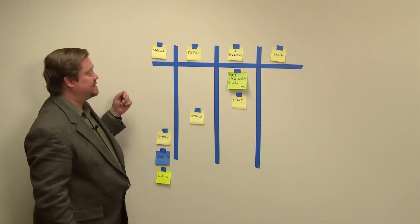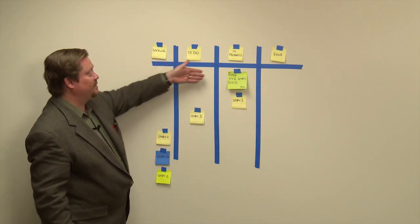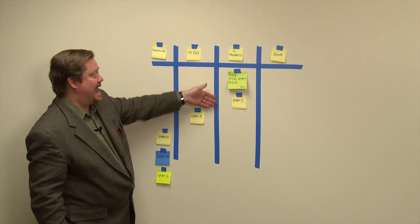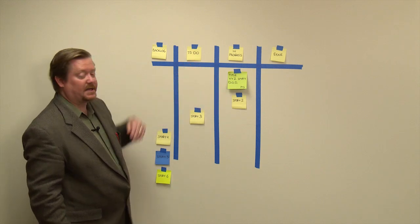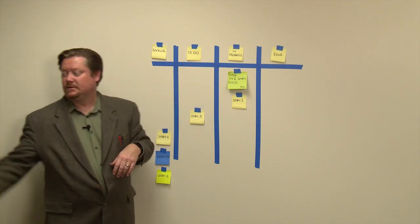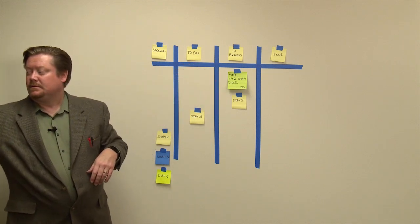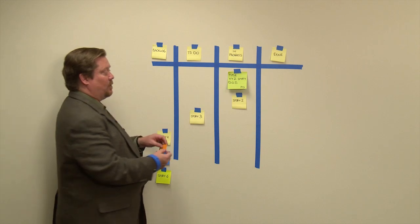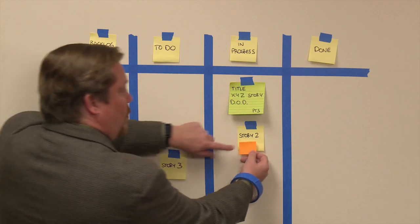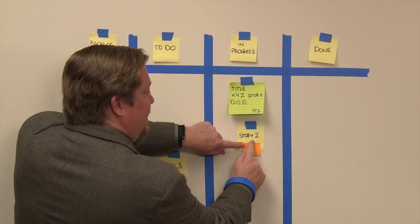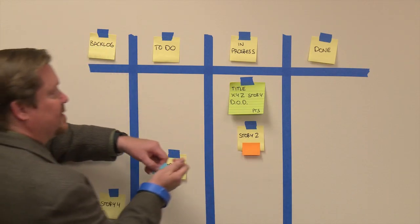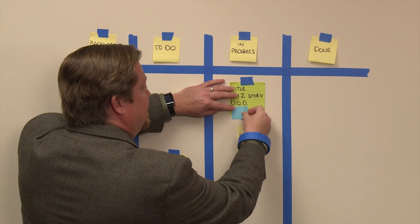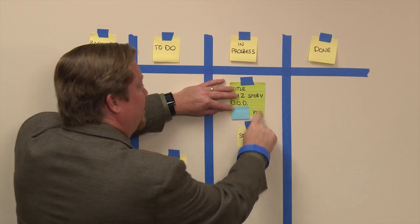You can even indicate ownership of stories by using avatars or sticky notes. For example, this orange sticky might indicate a specific person on the team, while this blue sticky might indicate someone else on the team.